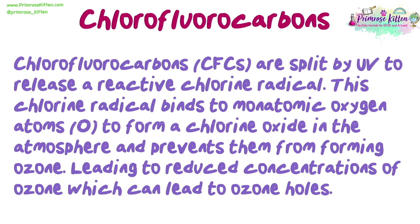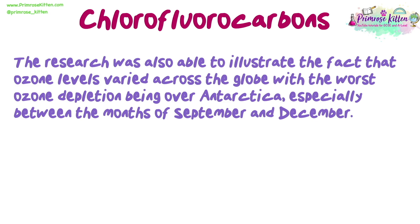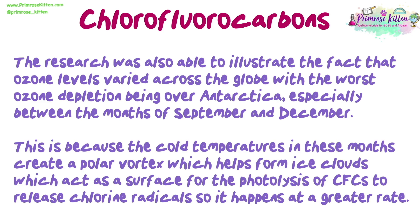CFCs are split by UV to release a reactive chlorine radical. This chlorine radical binds to monatomic oxygen atoms to form chlorine oxide in the atmosphere, preventing them from forming ozone and leading to reduced ozone concentrations, which can cause ozone holes. The research also illustrated that ozone levels varied across the globe, with the worst depletion over Antarctica, especially between September and December. This is because cold temperatures in these months create a polar vortex, which helps form ice clouds that act as a surface for the photolysis of CFCs, releasing chlorine radicals at a greater rate.